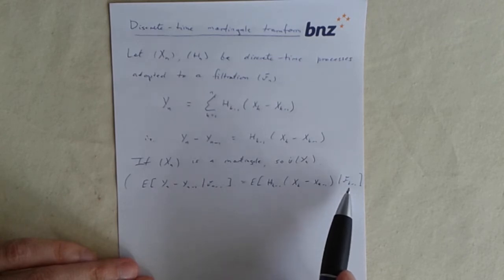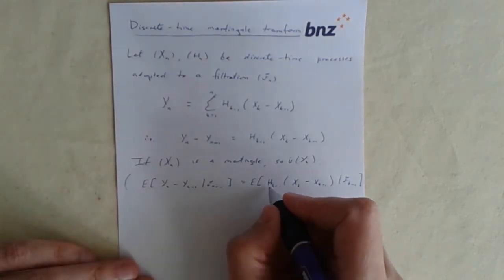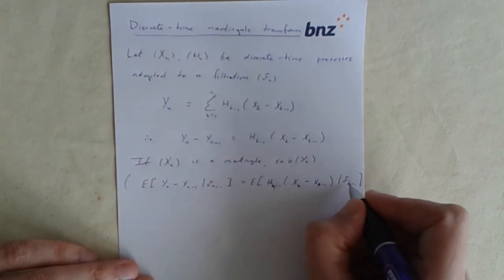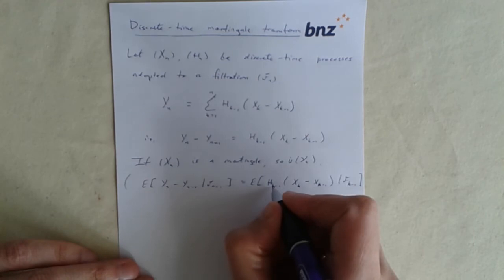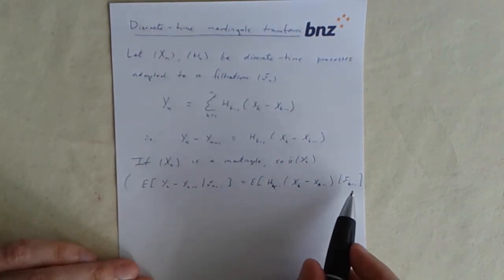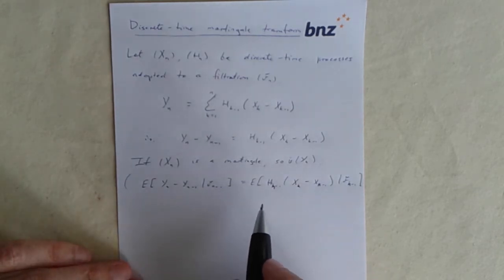The increment of y is just like this, so we can just write it, and then h. Now h was adapted to the filtration f.